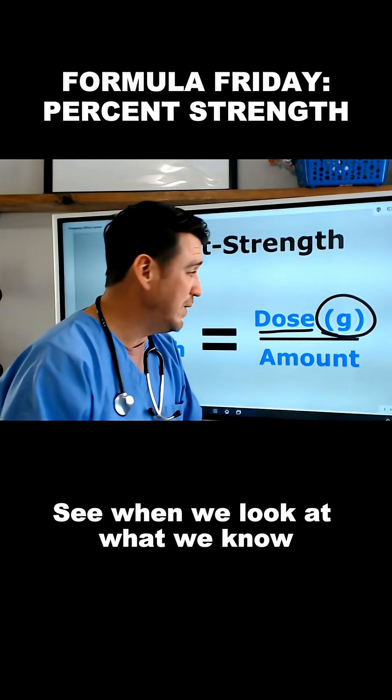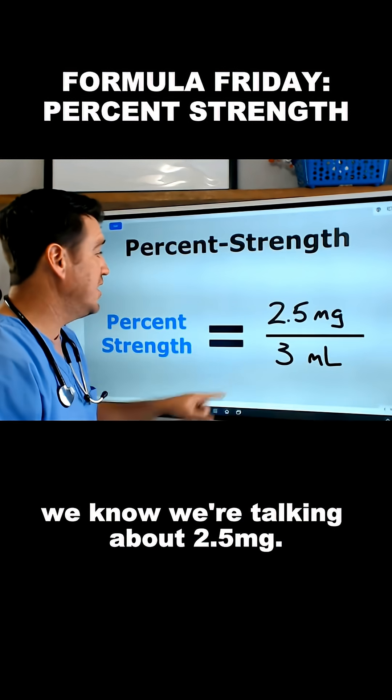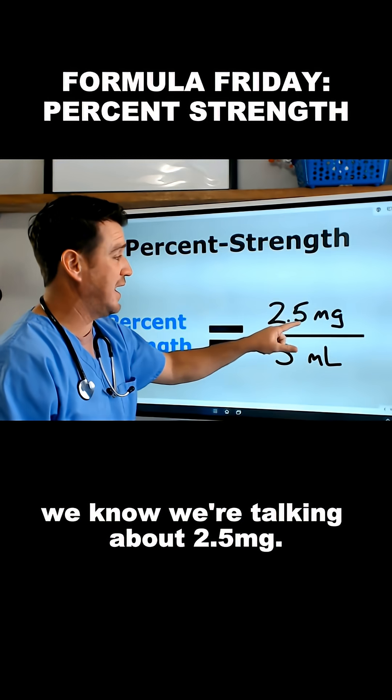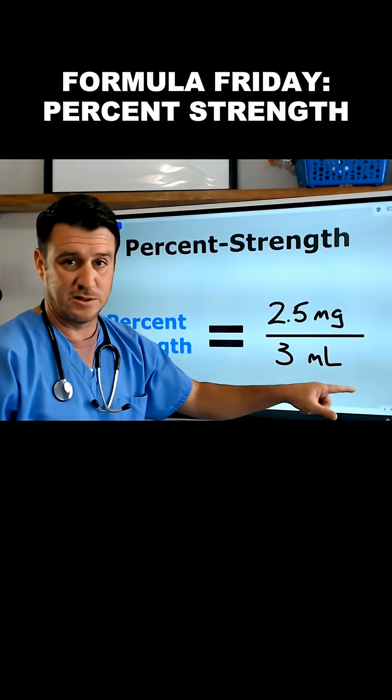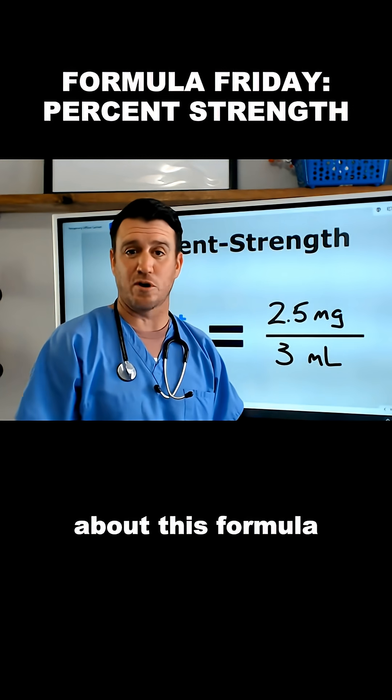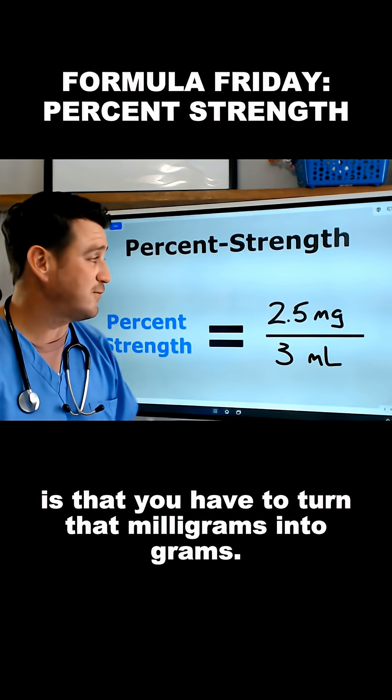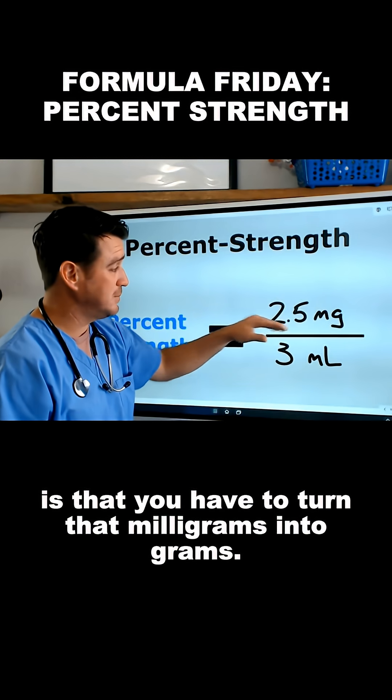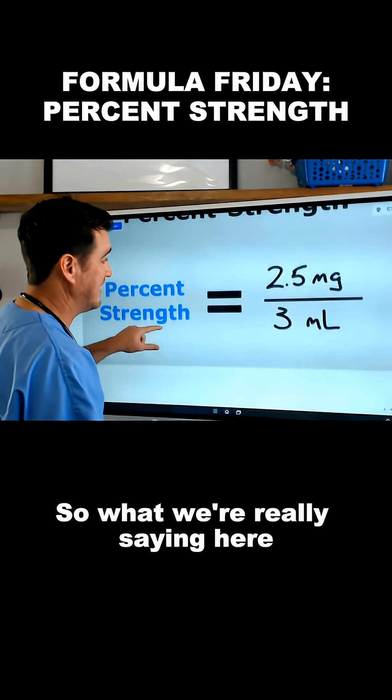When we look at what we know, we know we're talking about 2.5 milligrams. So the first thing you have to do and the thing you have to always remember about this formula is that you have to turn that milligrams into grams.